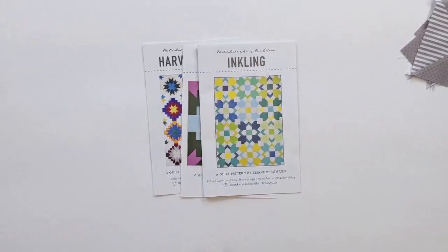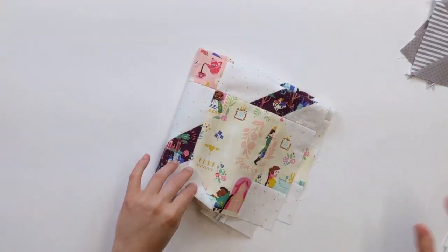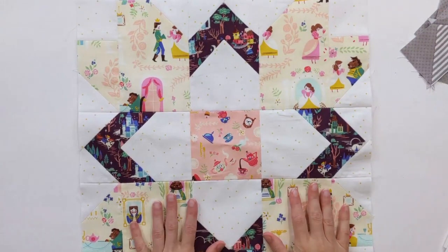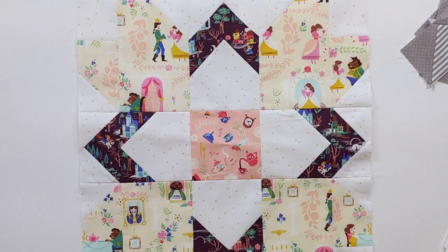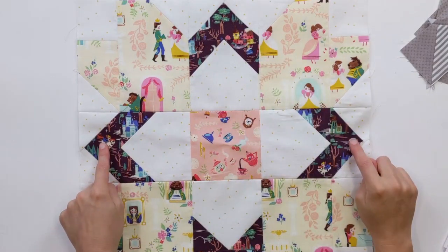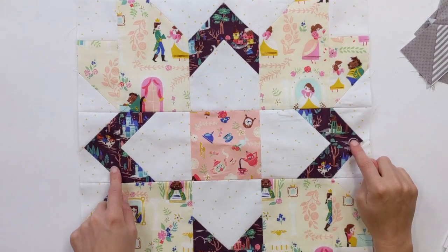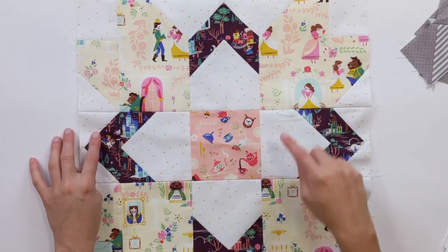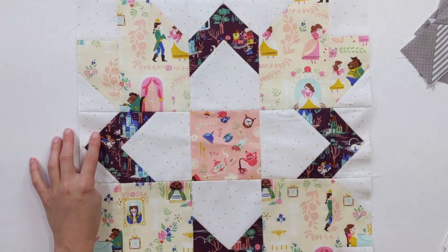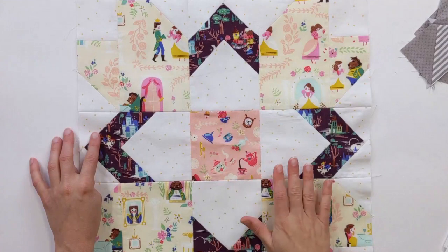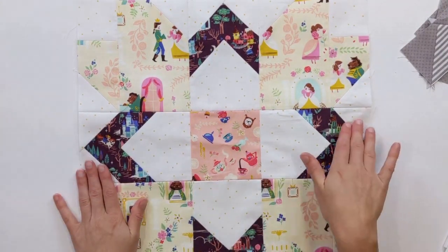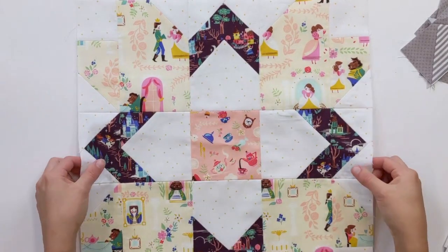And I have an Inkling block to show you what that looks like, especially with directional fabrics. So here's Inkling and you'll notice this really cute Beauty and the Beast fabric. And here are my flying geese. One, two, three, four. So this is a very directional one direction print of Belle on her horse with the castle. And all four of these have the print facing the correct way. This is really easy to do with four at a time flying geese.